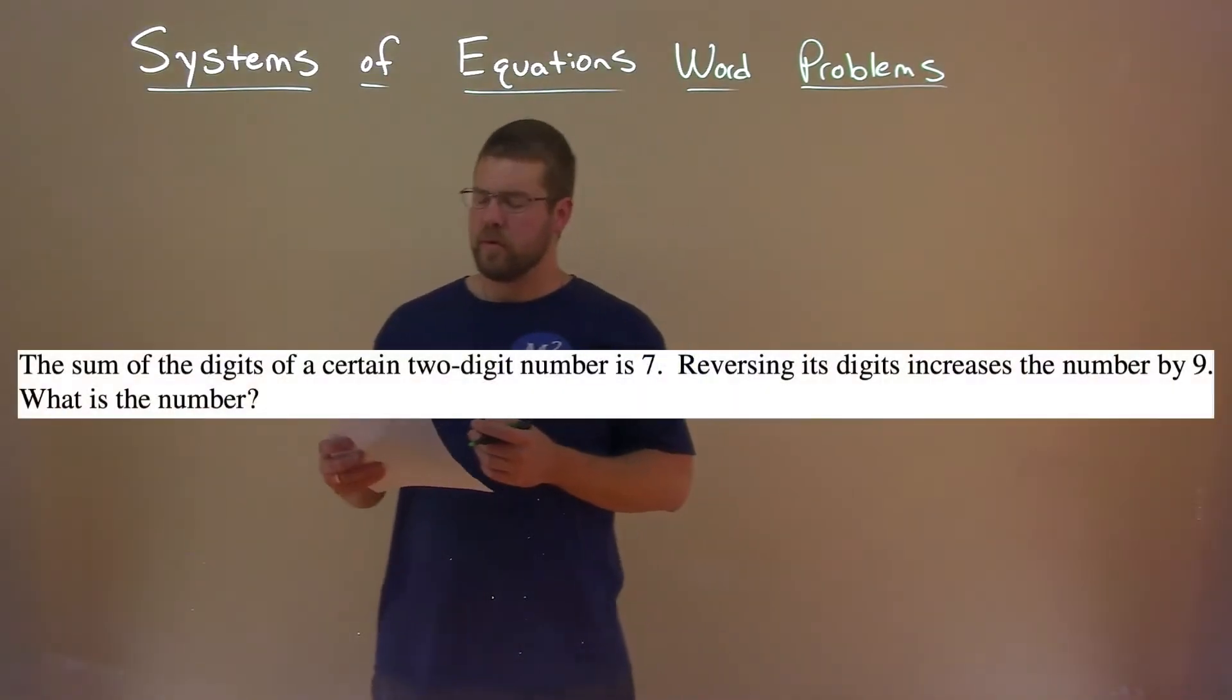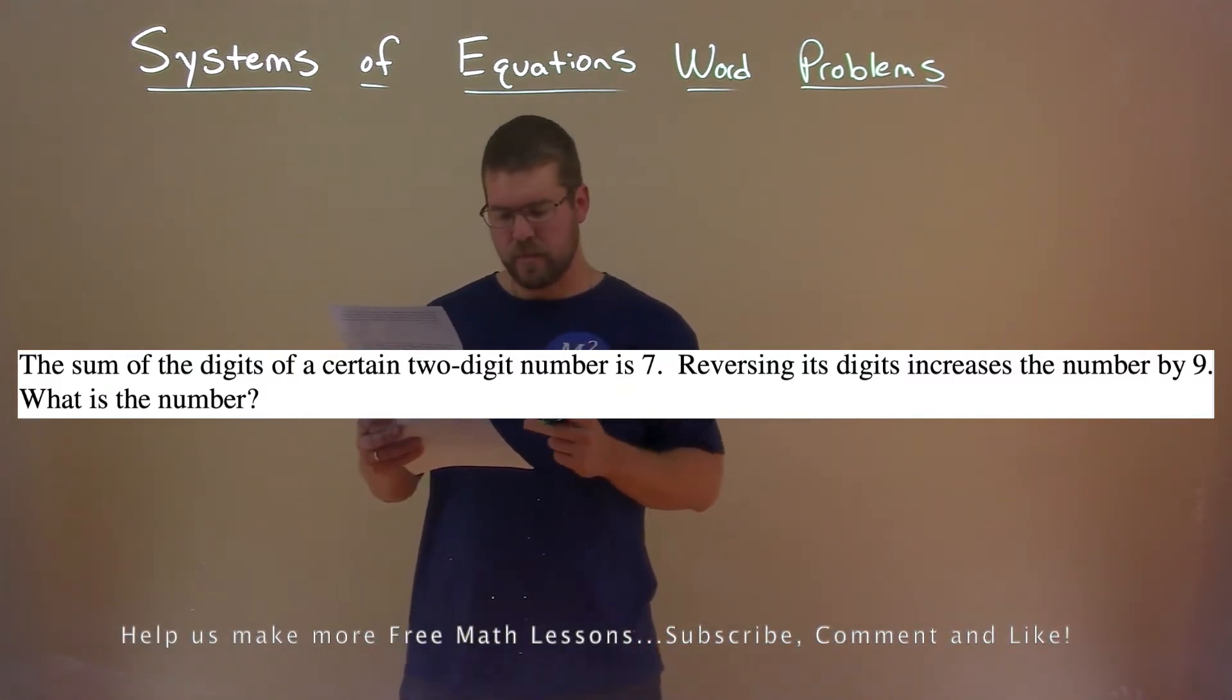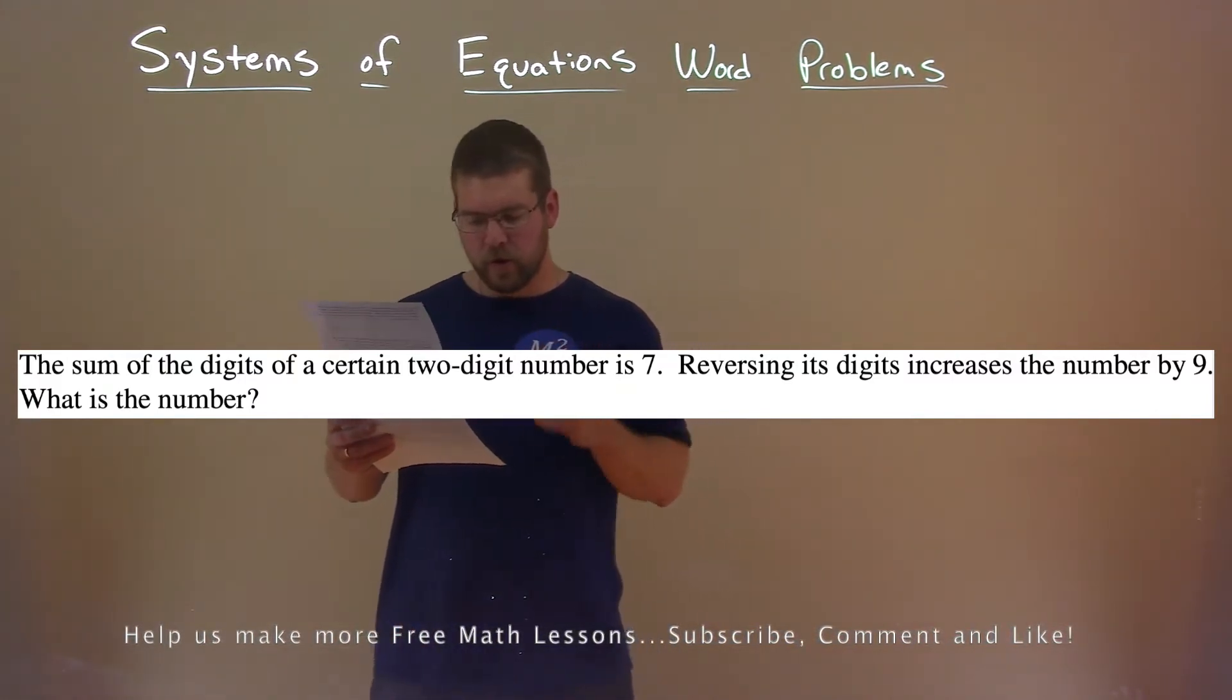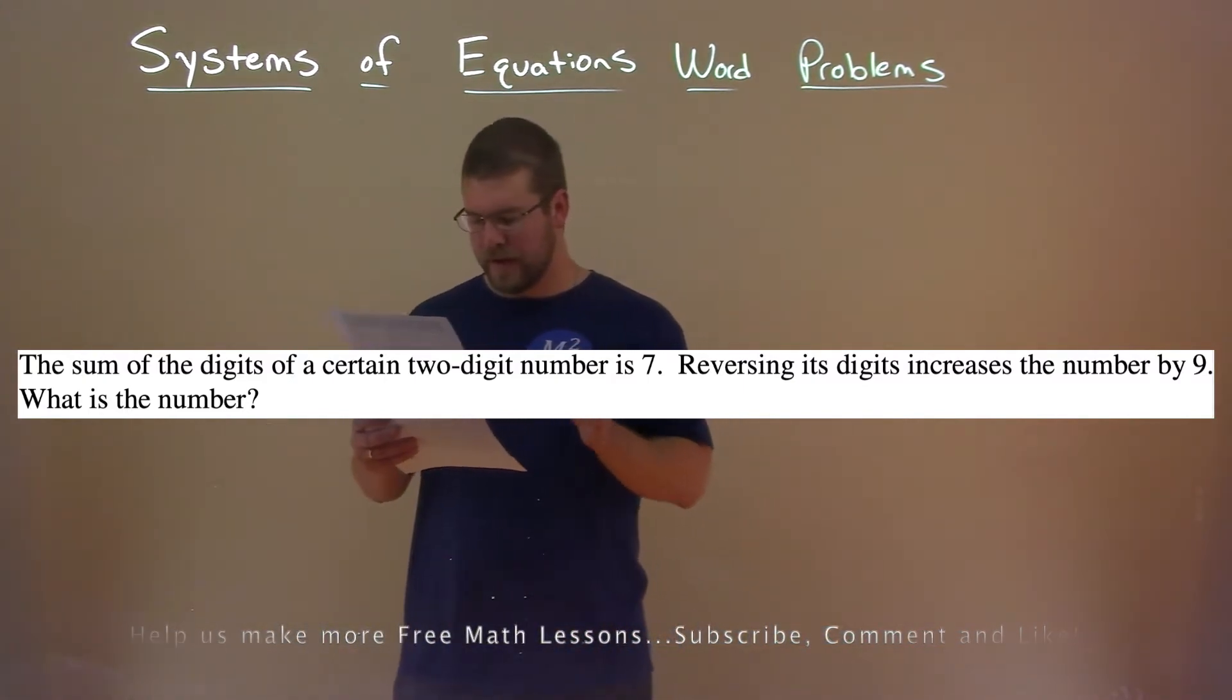We're given this word problem. The sum of the digits of a certain two-digit number is 7. Reversing its digits increases the number by 9. What is the number?